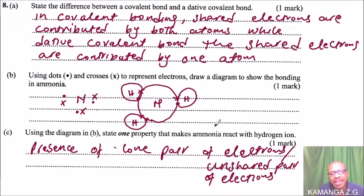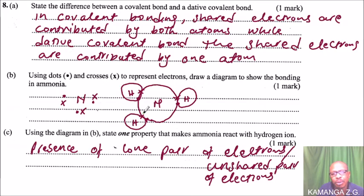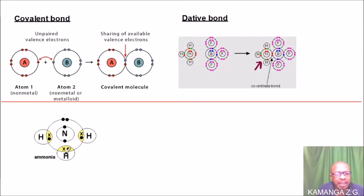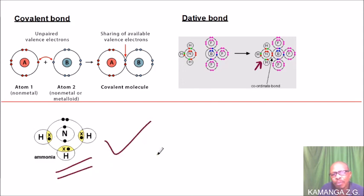This is the reason why nitrogen and hydrogen combine easily to form ammonia. And that is how you answer that. Looking at our picture here, you can see this is a diagram representing ammonia. You can also draw it like this — there is no problem. You should be able to get marks if you represent it that way; it is still okay.